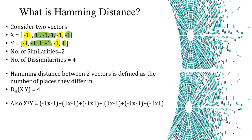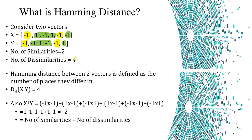Now if we take the dot product of these two vectors — multiplying element-wise, for example minus one into one, one into minus one, and so on — the result is minus two. In terms of similarities and dissimilarities, this minus two is nothing but the number of similarities minus the number of dissimilarities. So Xi transpose times X gives us similarities minus dissimilarities.